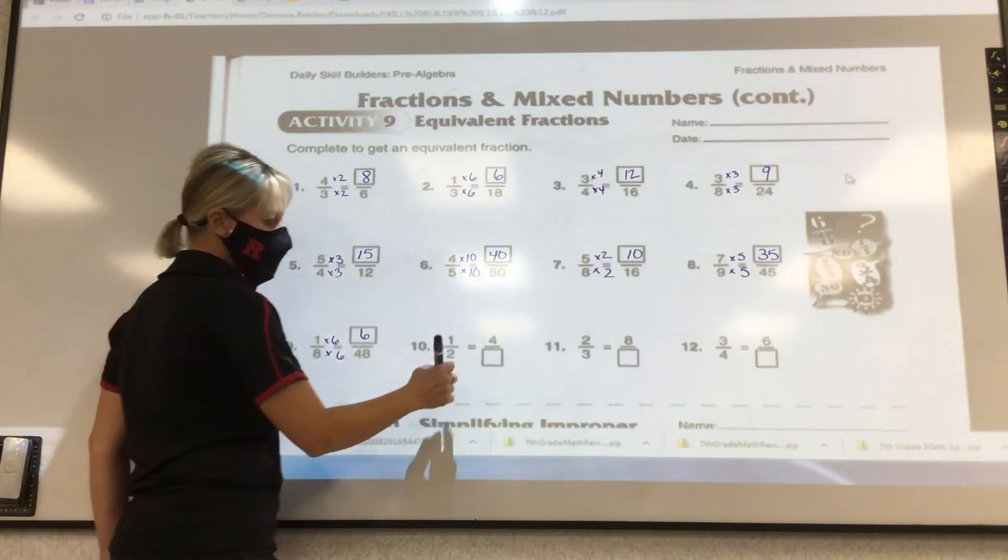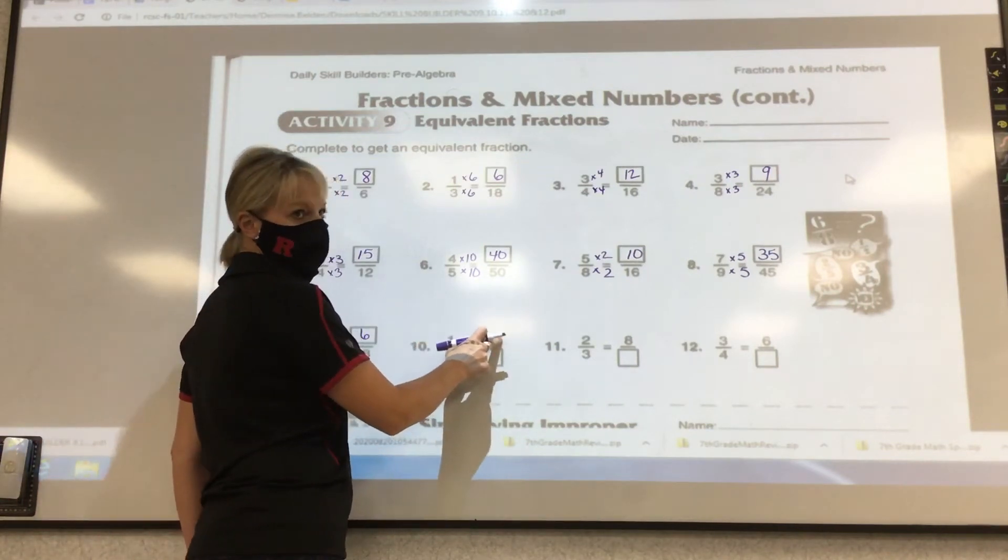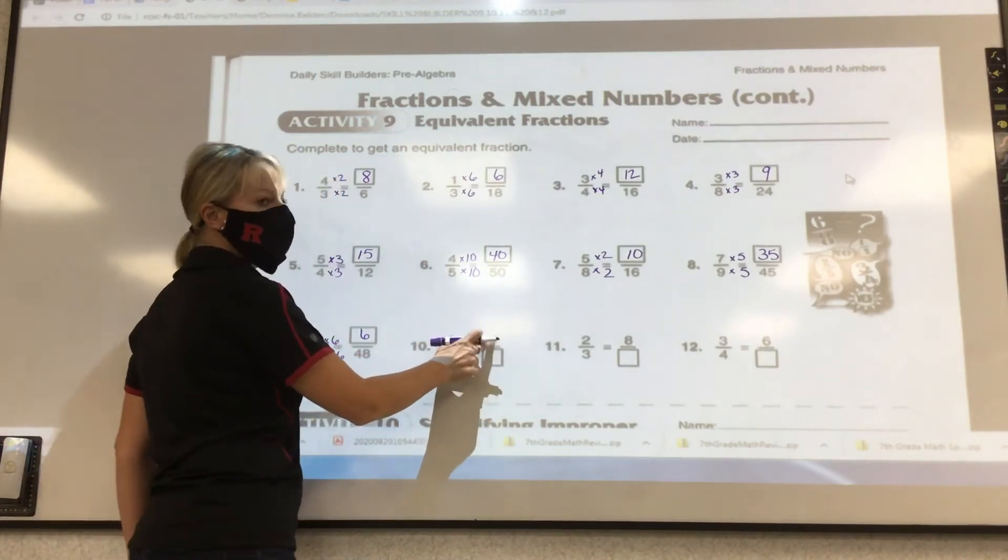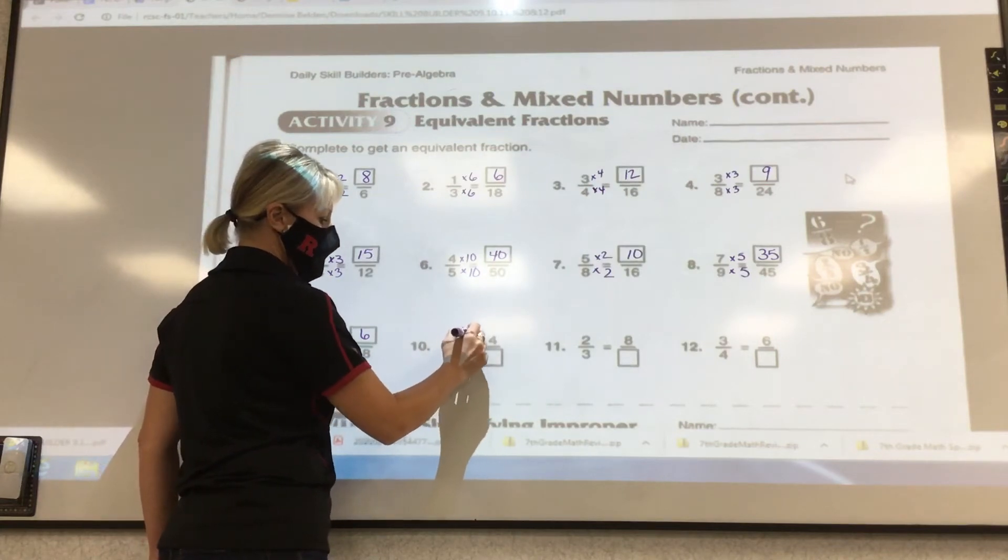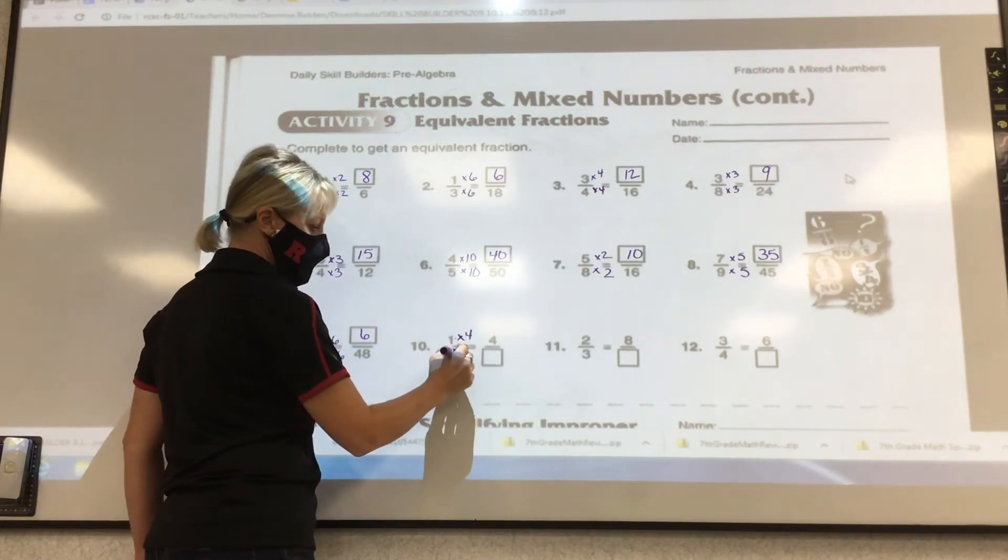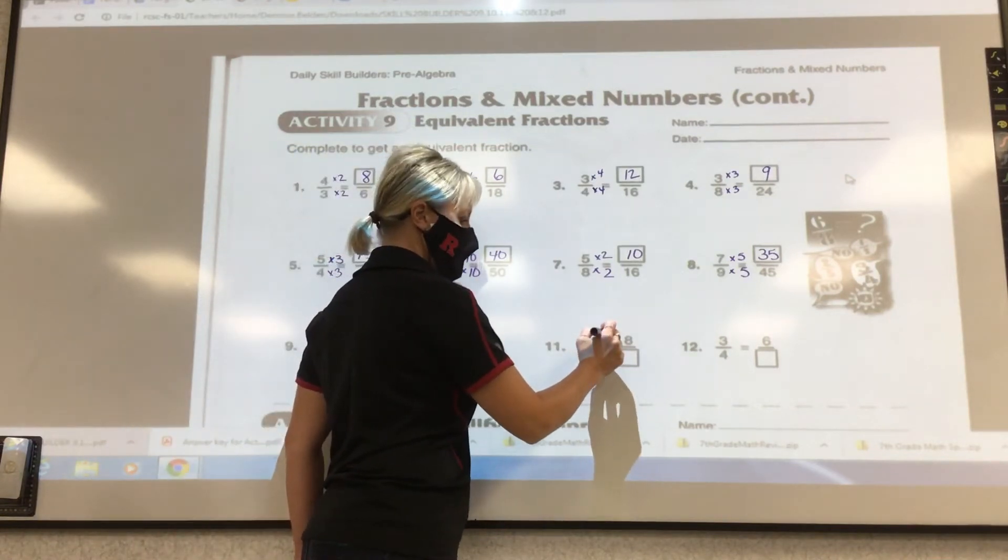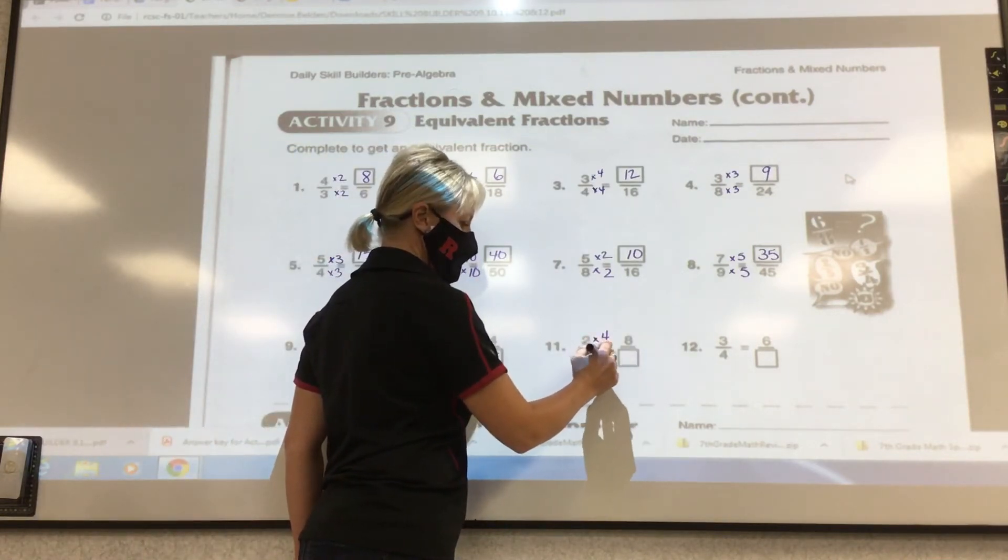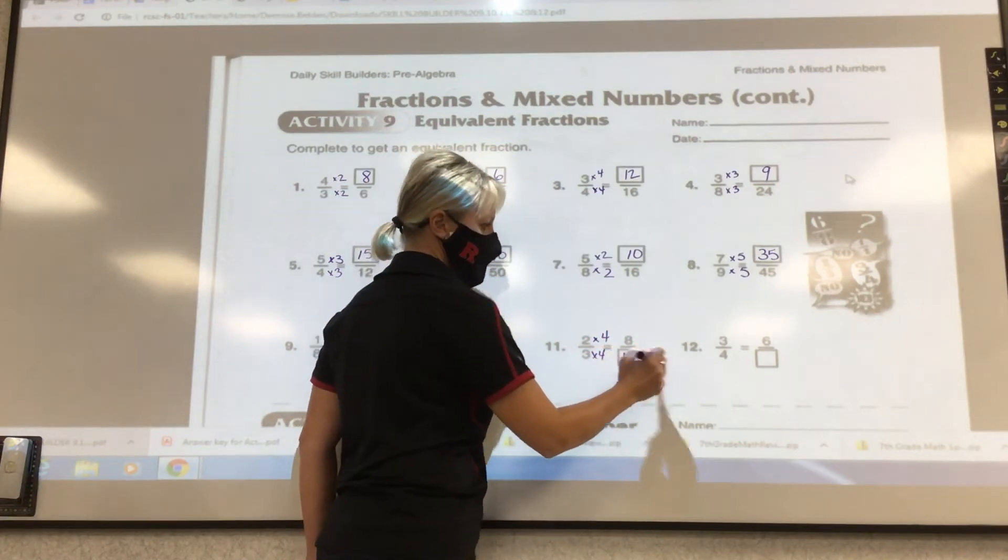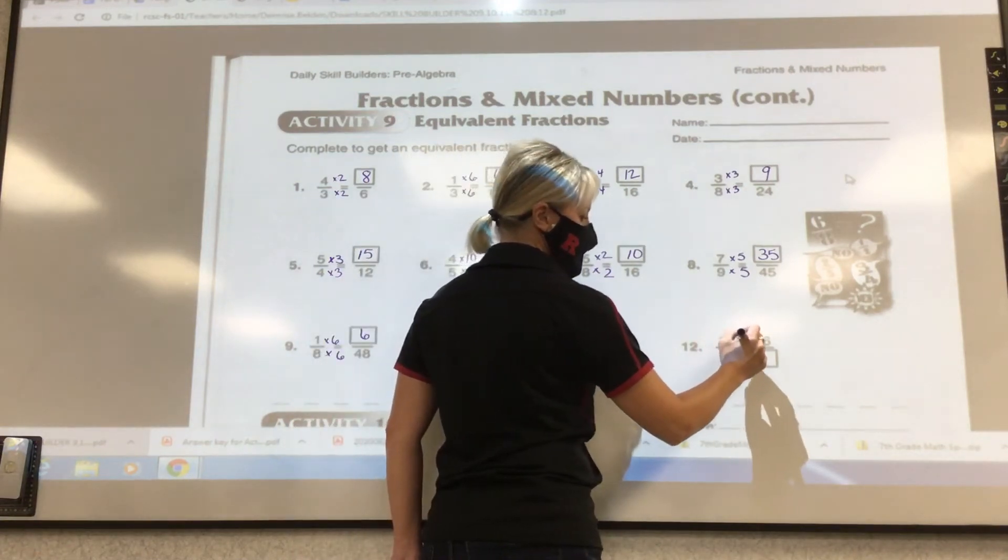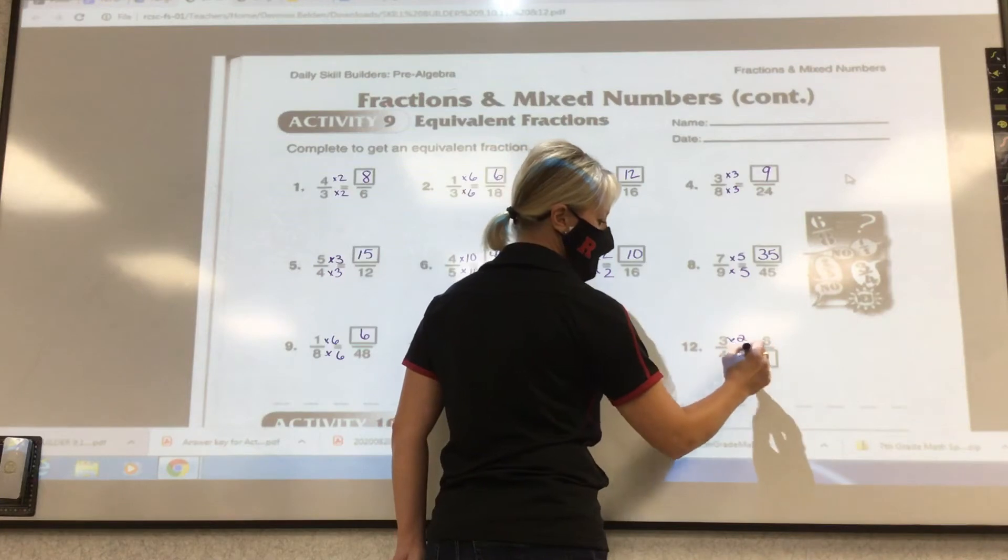More of you need to answer. Now look, you can do this the same way if you know what's on the numerator. So 1 times? 4. Thank you. It's 4, so 2 times 4 is 8. 2 times? 4. It's 8, so 3 times 4 is 12. 3 times? 2 is 6, so 4 times 2 is 8.